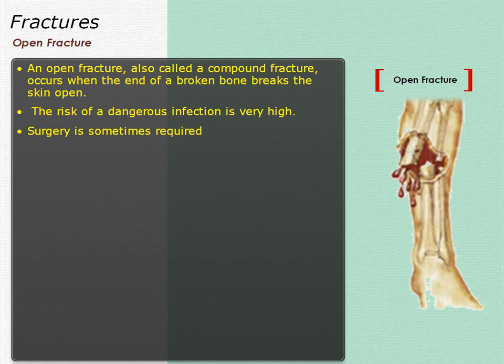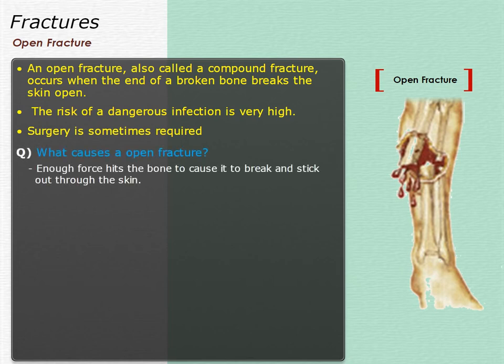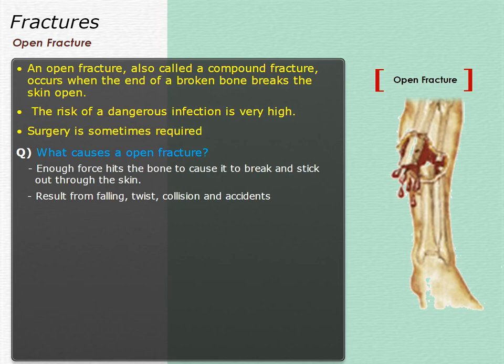What causes an open fracture? An open or compound fracture happens when enough force hits the bone to cause it to break and stick out through the skin. It can happen as a result of falling, such as falls from bicycles. When playing sports, a bone may be hit directly, which may also cause this kind of fracture.